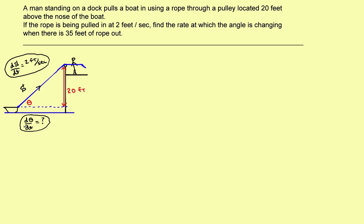I need a relationship in the second step that allows me to tie these two things together. The height is 20 feet — that's the opposite side of the angle. The slant distance S is the hypotenuse of the triangle. Since I know something about the opposite and the hypotenuse, I'm going to use the sine of theta. So the sine of theta equals the opposite side, 20 feet, divided by the hypotenuse, S. That is my initial relationship.